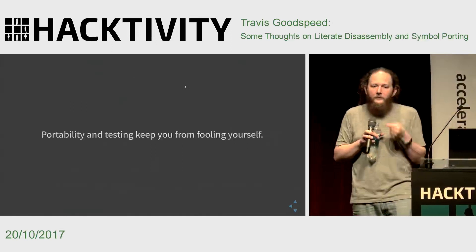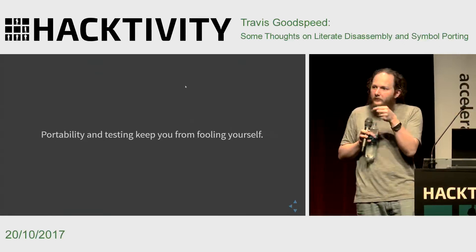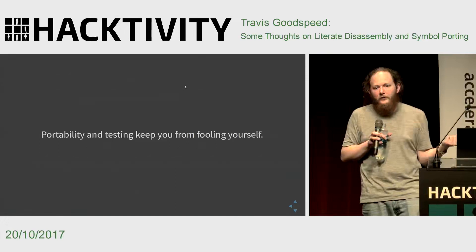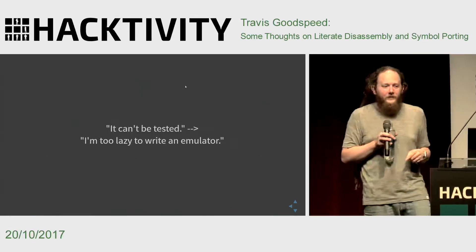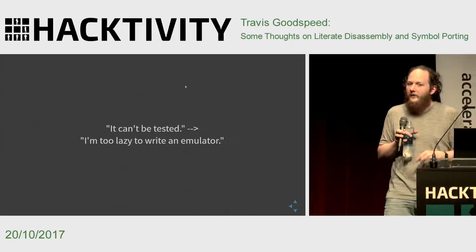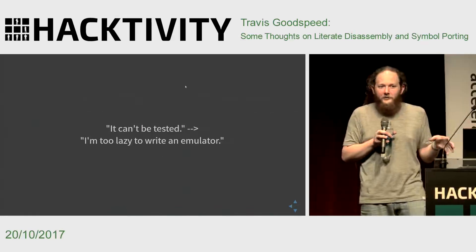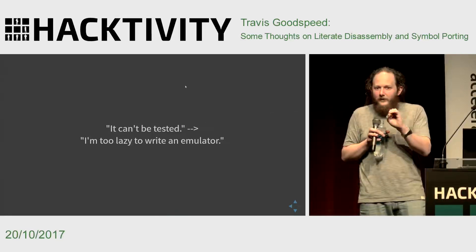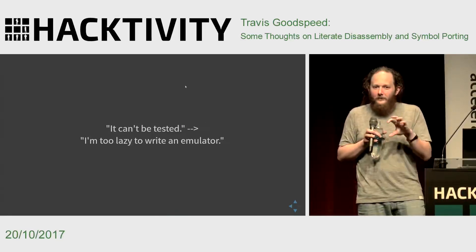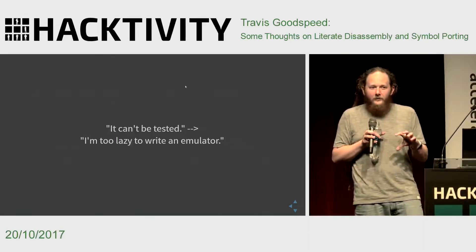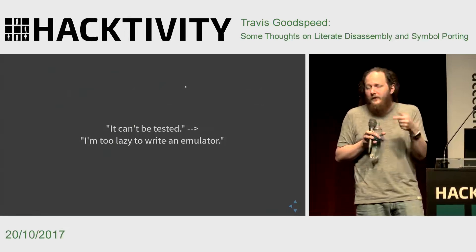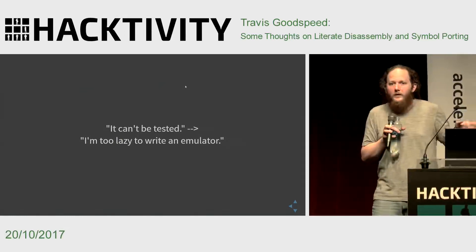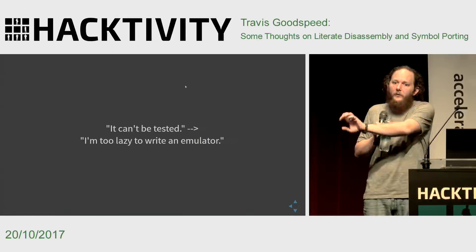Through portability and testing, you can keep from fooling yourself. You can make sure things don't break and that the pieces you understood yesterday you continue to understand tomorrow. And if you think something can't be tested, the truth is that you're just too lazy to write an emulator. If you're going to all the trouble to reverse engineer something, you can get pieces of it running in simulation. There are simple Python scripts that will emulate any microcontroller. QEMU can handle all modern high-end architectures. Anything that Linux can run on, you can compile an executable for and run it locally in emulation. Embedded ARM code runs fine in an ARM Linux process inside of QEMU on a modern x86 laptop.